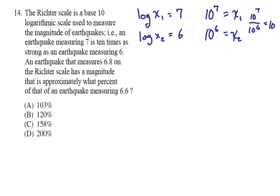So what we want to find out is an earthquake that measures 6.8. So if we set up the logarithm for that, we set up another logarithm for an earthquake measuring 6.6. So once again, we would do x sub 1 is equal to 10 to the 6.8, whereas x sub 2 is equal to 10 to the 6.6.